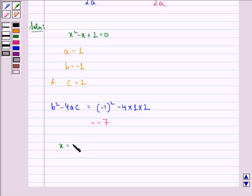Therefore, x is equal to 1 plus minus under the root minus 7, the whole divided by 2 into 1. So, x is equal to 1 plus minus root 7i divided by 2.